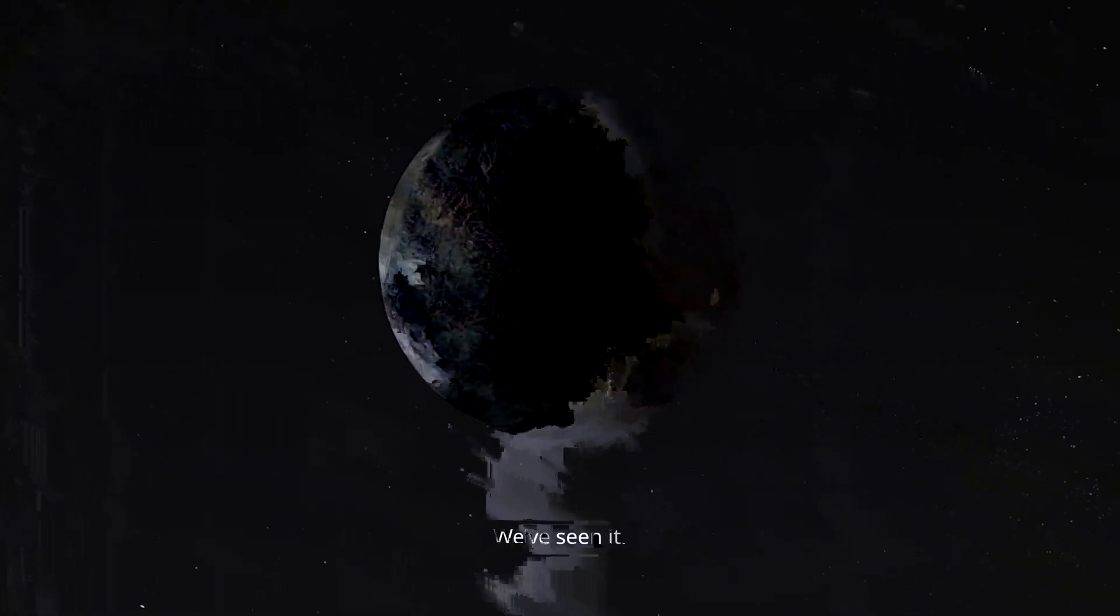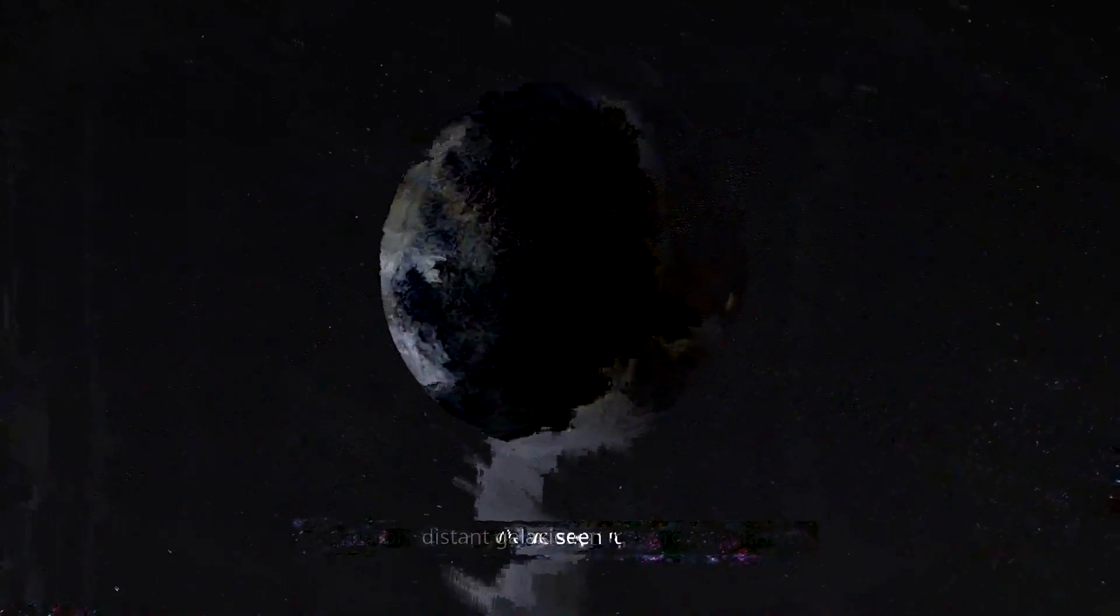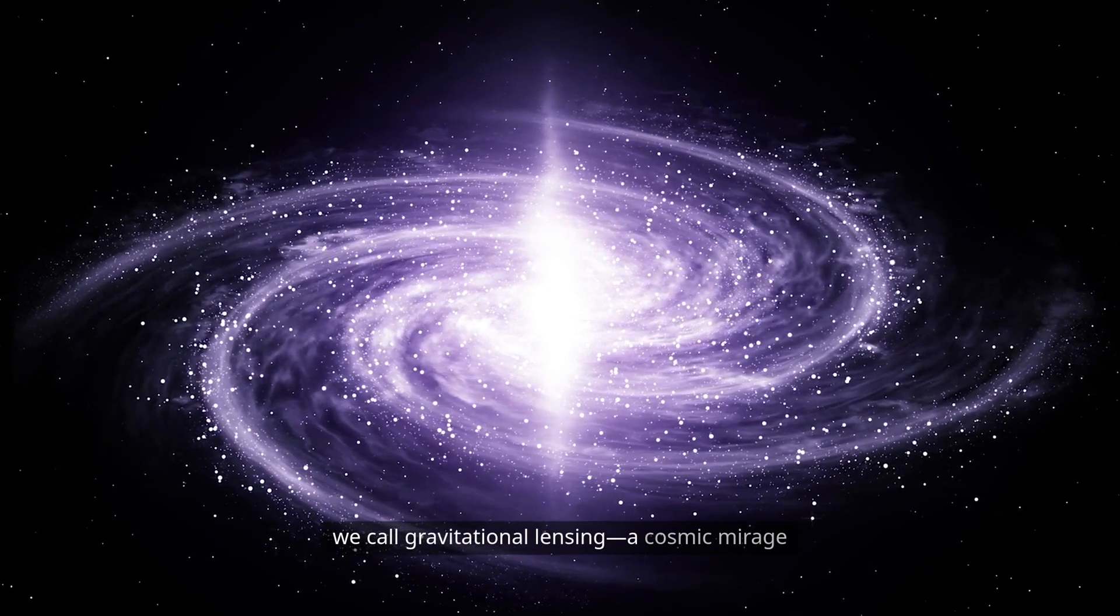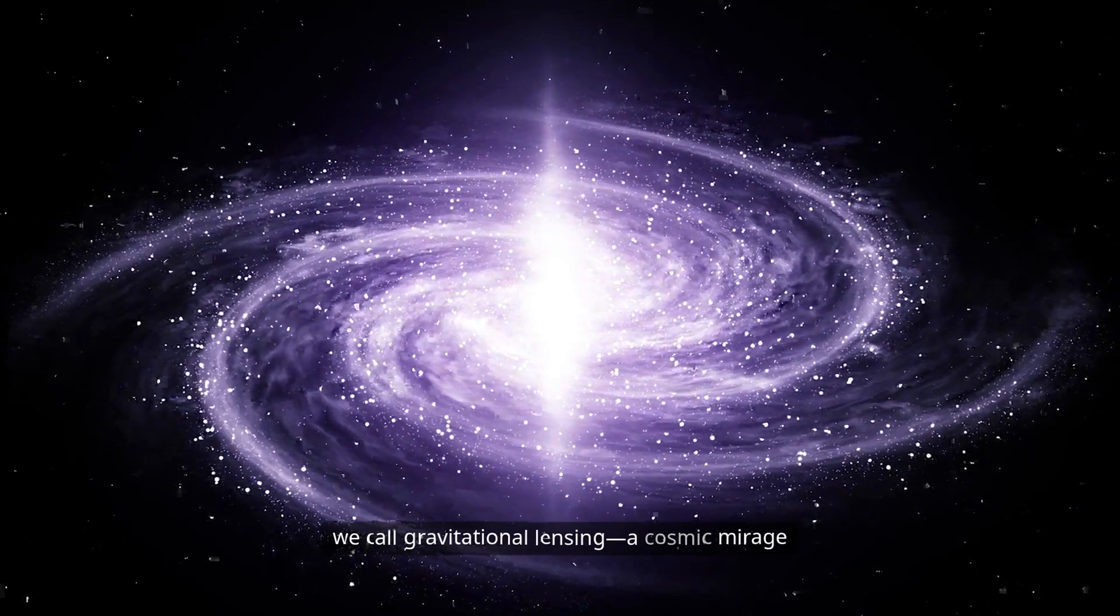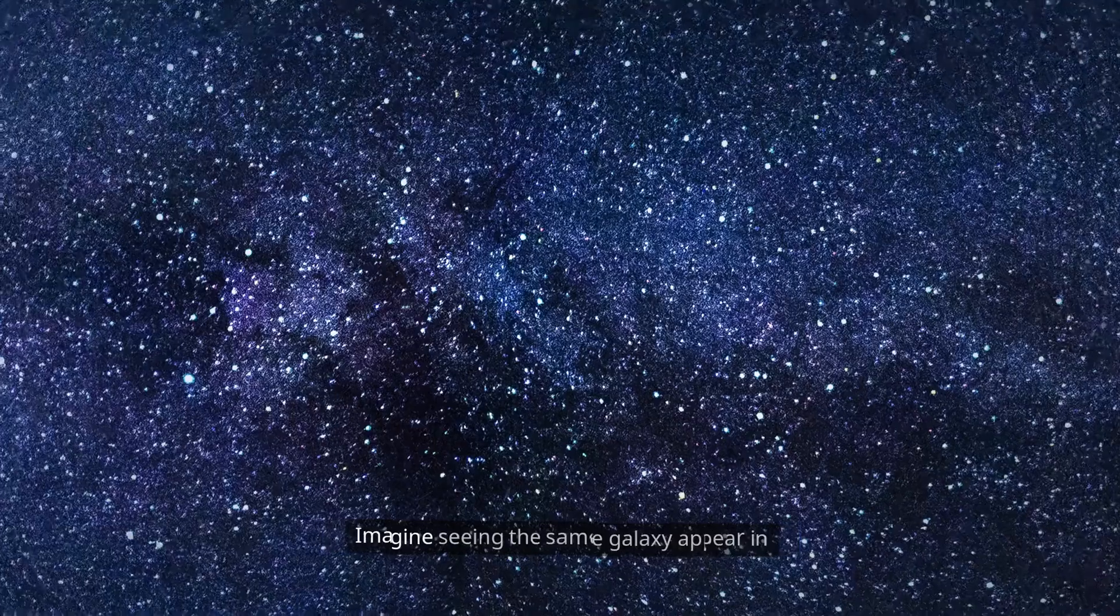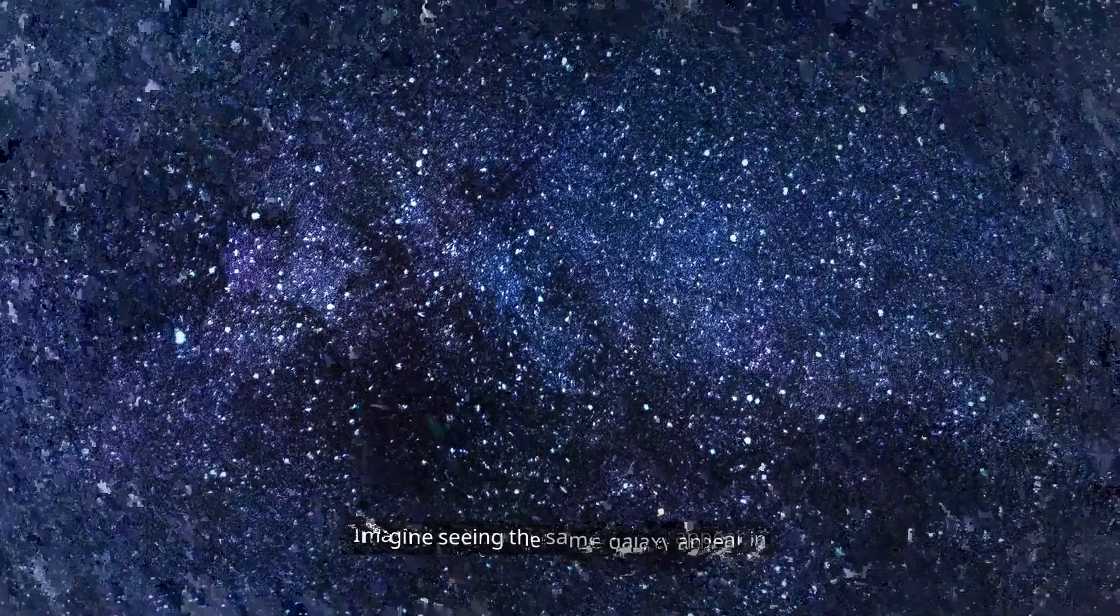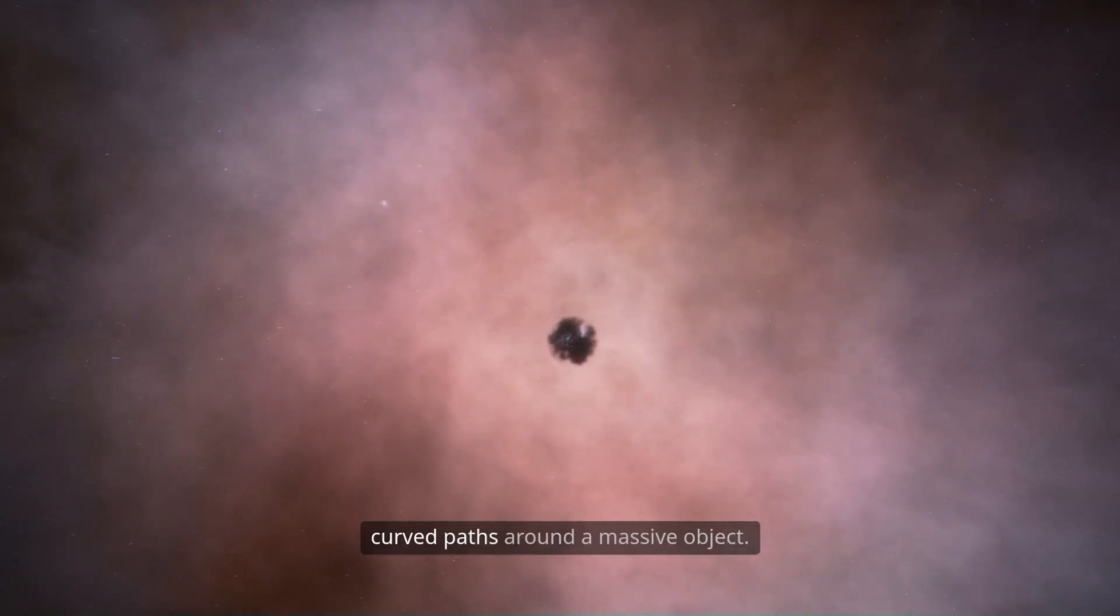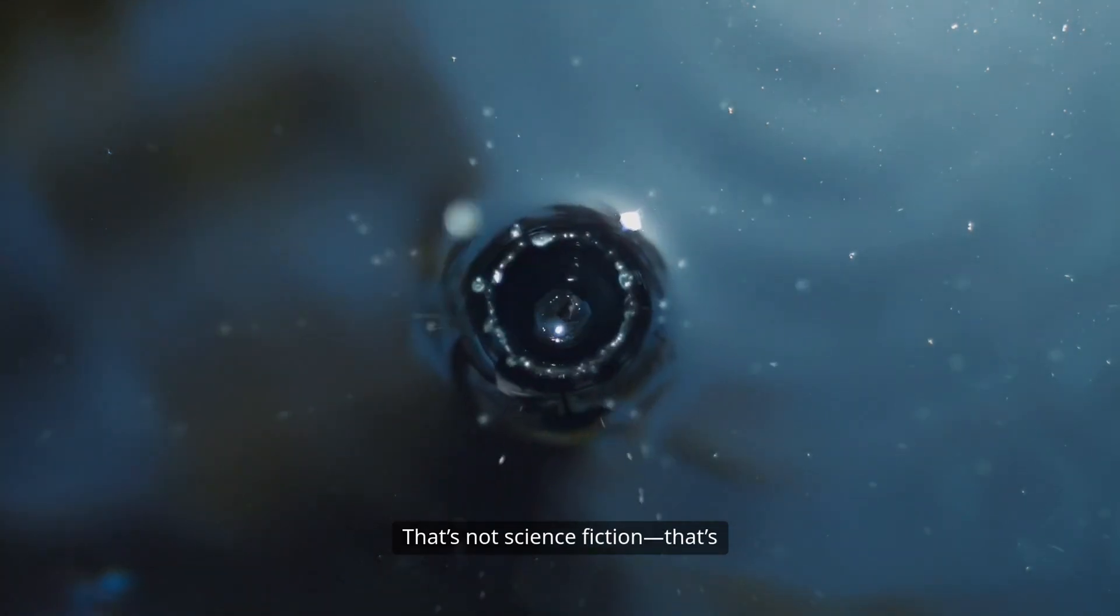Gravity can bend light. We've seen it. Light from distant galaxies, curved by objects like black holes, creating what we call gravitational lensing—a mirage where light arcs across the sky. Imagine seeing the same galaxy appear in multiple places because light took different curved paths around a massive object. That's not science fiction. That's our reality.